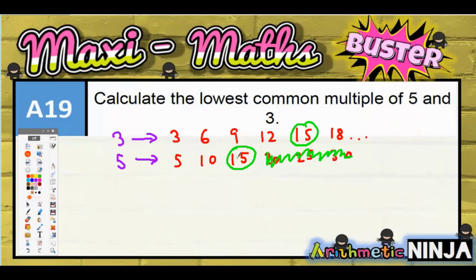So I could have actually stopped after 15 if I was being alert and focused. I'd have realized that 15 is the lowest one in both lists; I didn't actually need the 20, 25, and 30. So we say the LCM, lowest common multiple, equals 15.